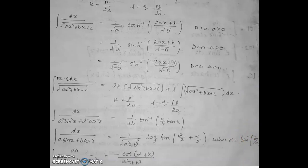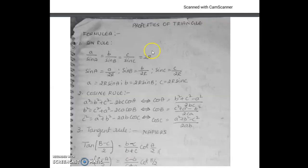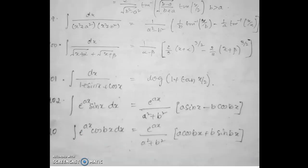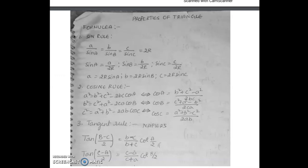In the integration section, here it is D by A — this part is missing. These are all integration formulas. You can pause at any point to view them. Here are the properties of triangle formulas: sine rule, cosine rule, tangent rule.